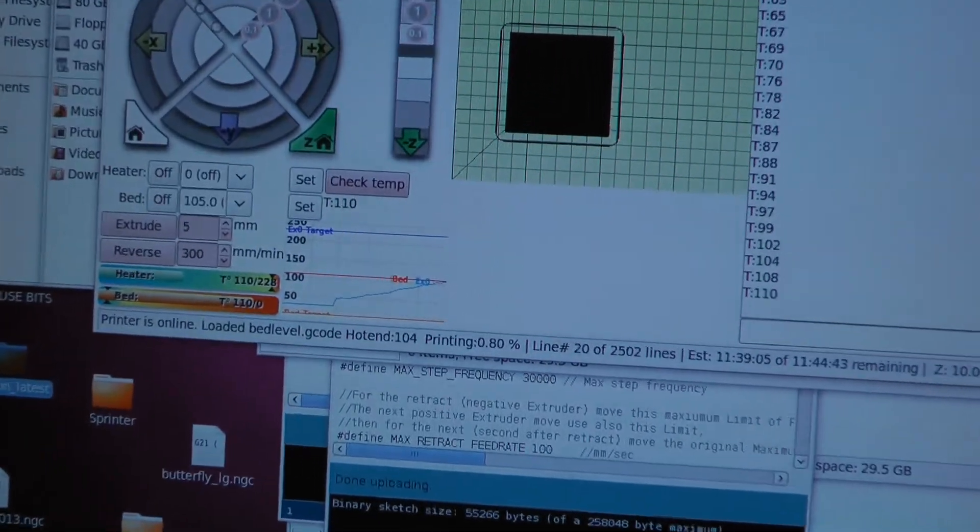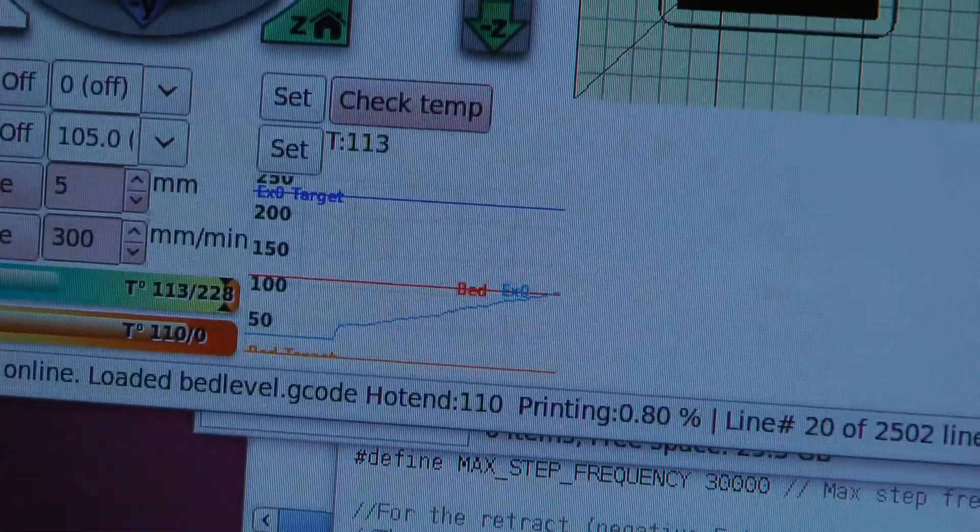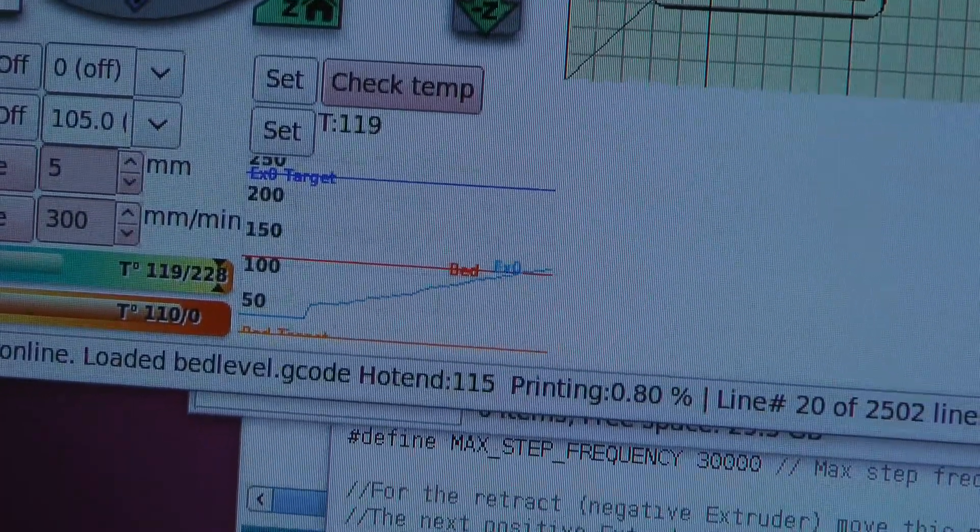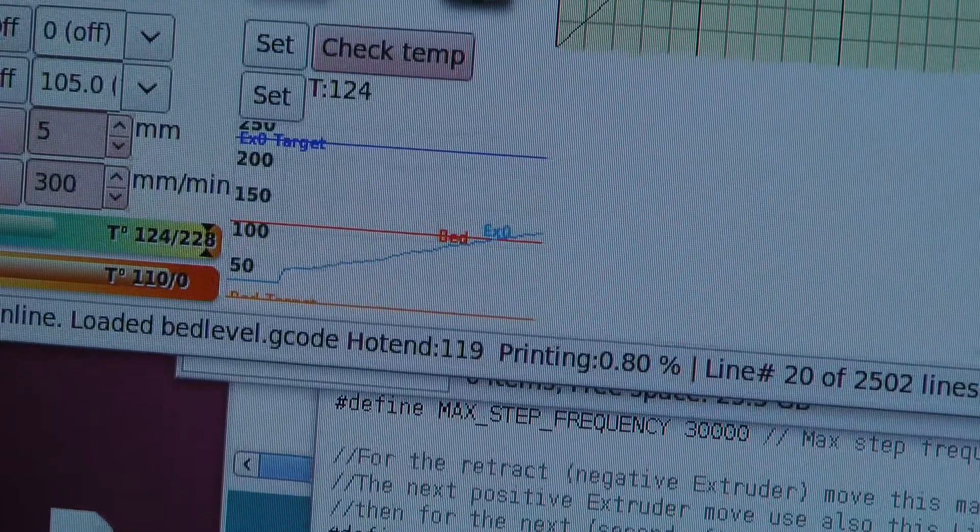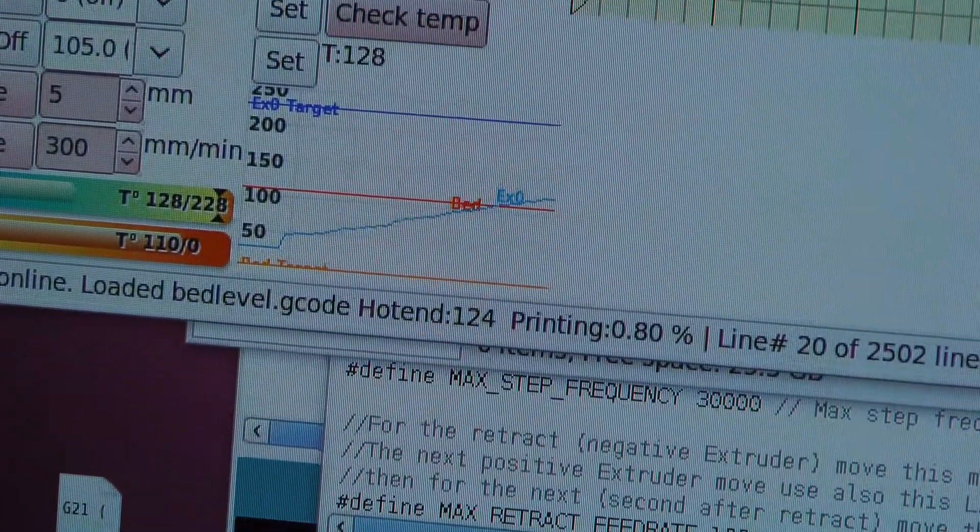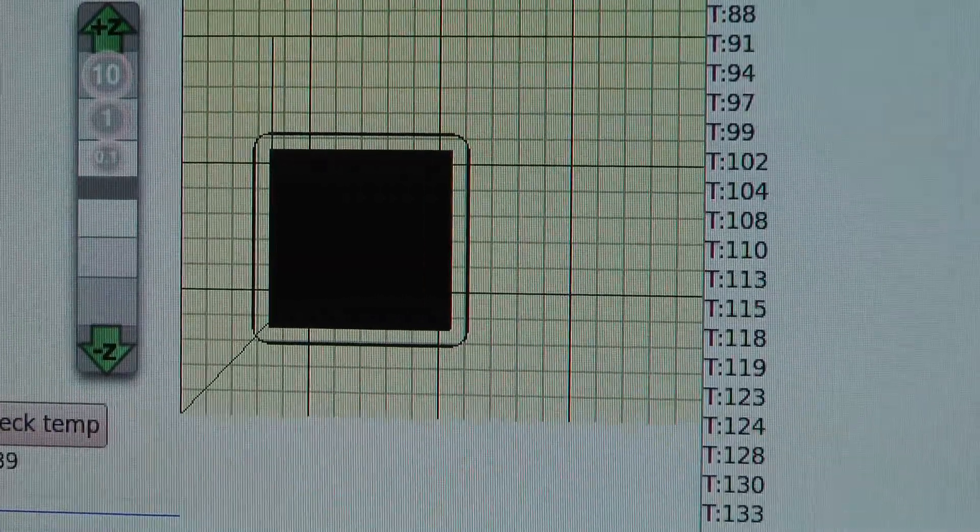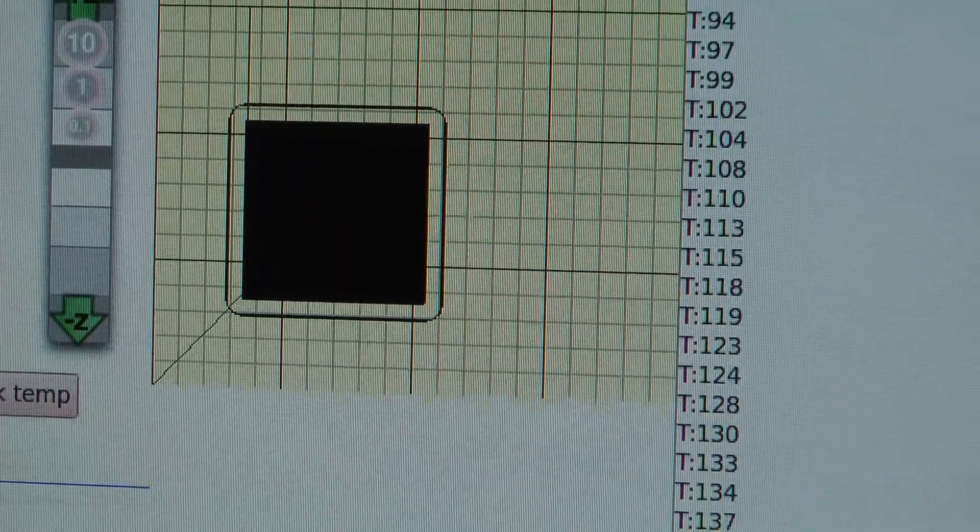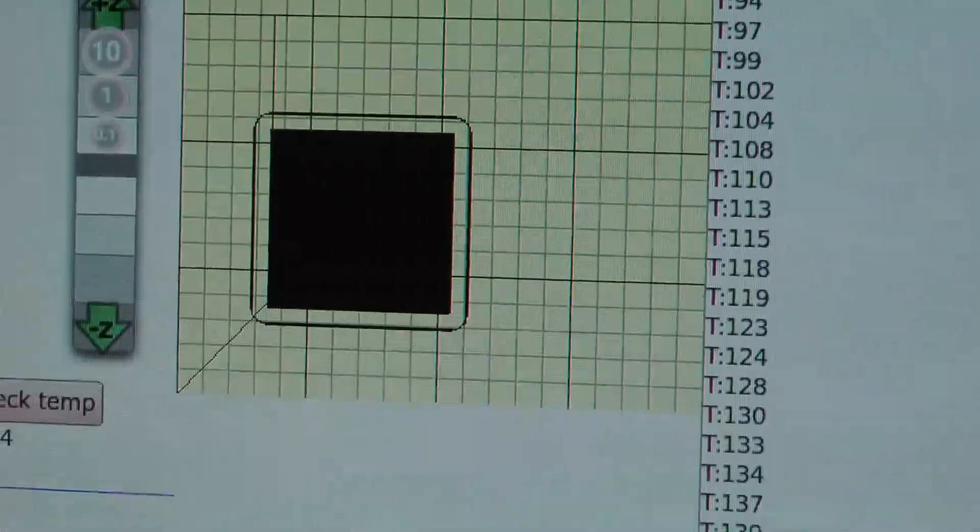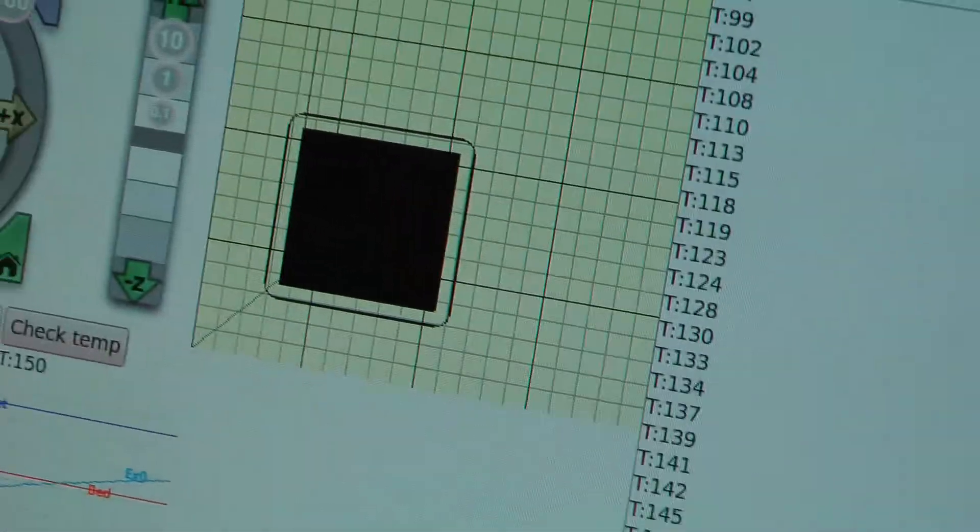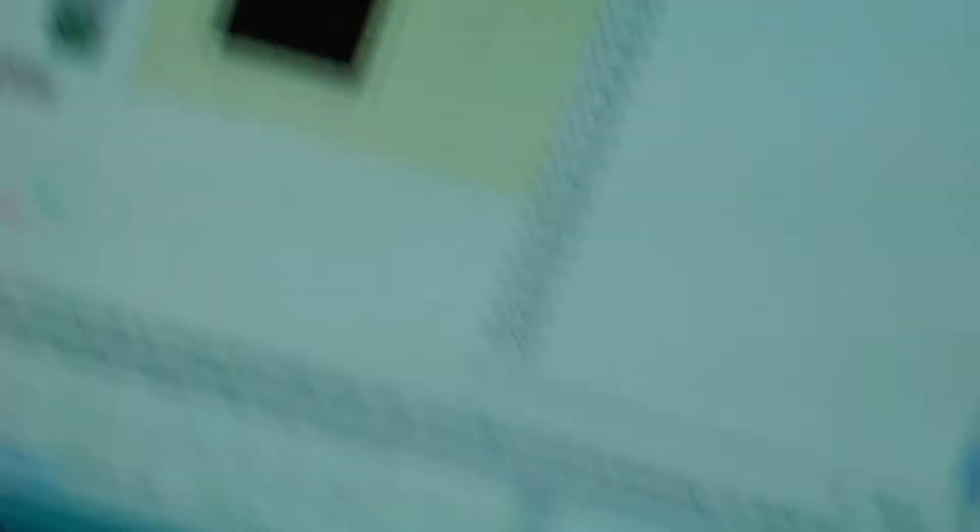So now what we have to do is wait for the tip to get to that. You can see that it's already reached 110 degrees. And there it goes. Climbing, climbing, climbing. This is a 70 by 70 X and Y cube. And I think it's .4 thick. And I use that to level my bed.